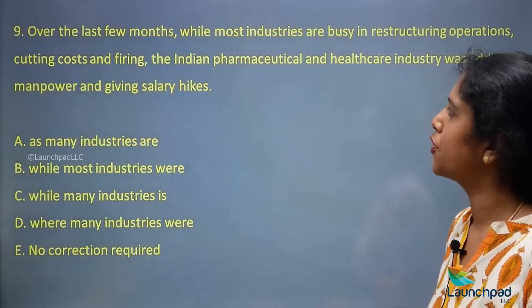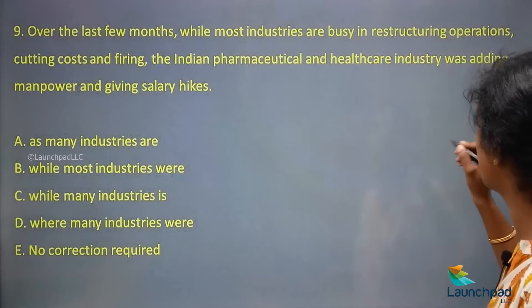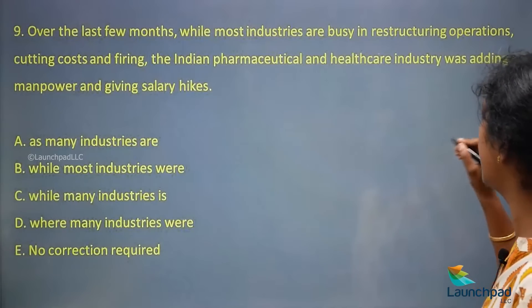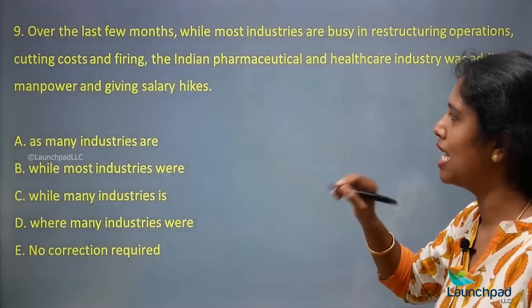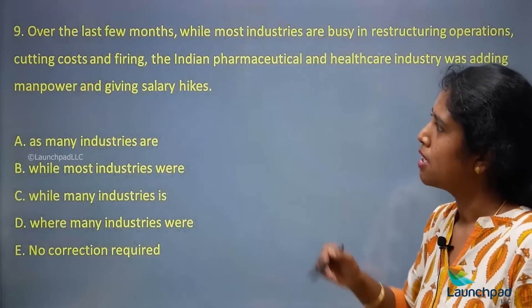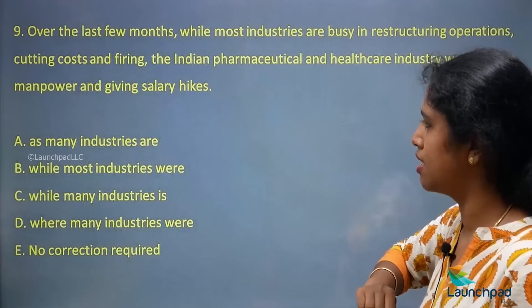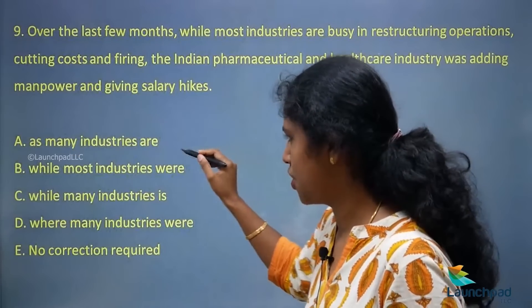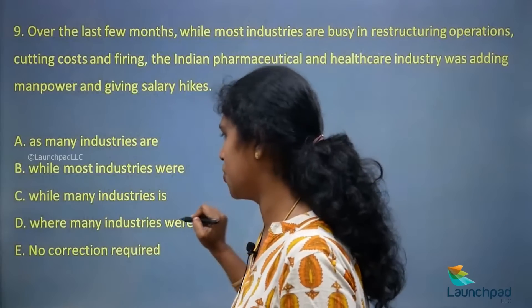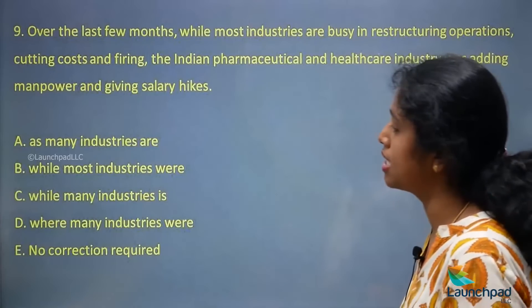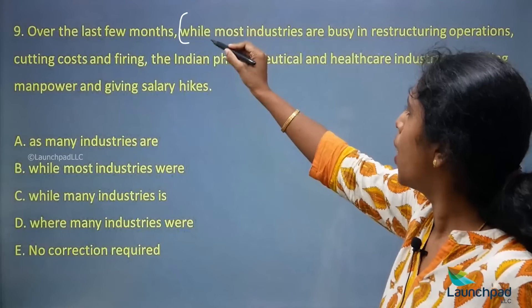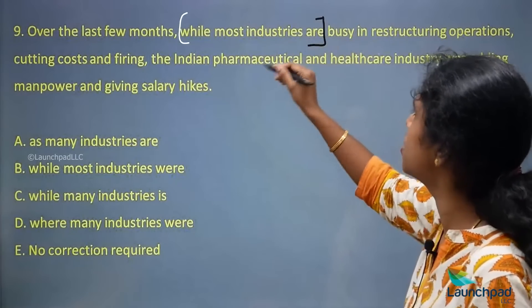Next: 'Over the last few months, while most industries are busy in restructuring operations, cutting costs and firing, the Indian pharmaceutical and healthcare industry was adding manpower and giving salary hikes.' The error part taken into consideration is 'while most industries are.' Now look at the first half: 'over the last few months' indicates the past tense.